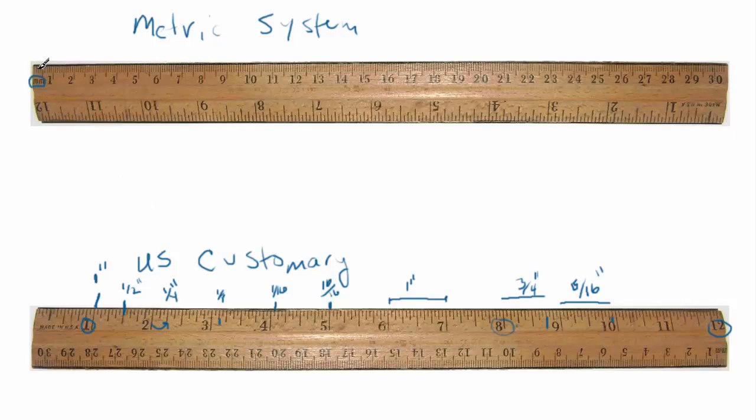Now that might be a little deceiving because the millimeters are actually these little tiny marks right in here. There are ten. And the metric system, as you know, is based on ten. So there are ten millimeters in there, makes one centimeter.